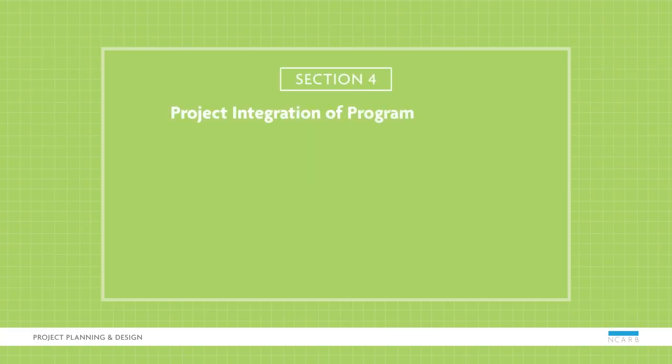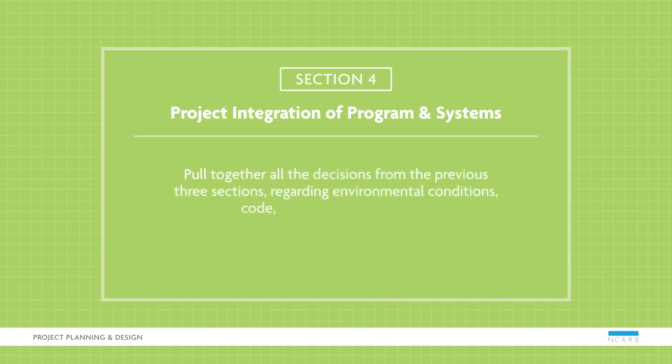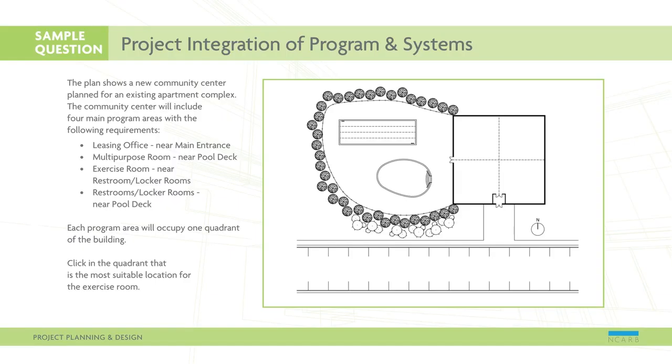In the Project Integration of Program and Systems section, you'll pull together all decisions from the previous three sections regarding environmental conditions, code, systems, and assemblies.